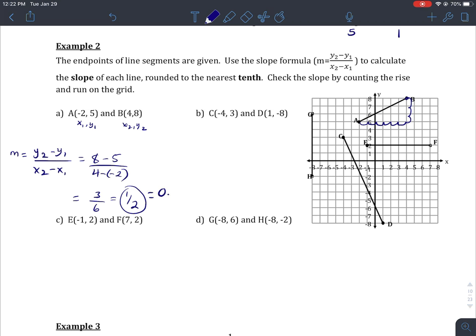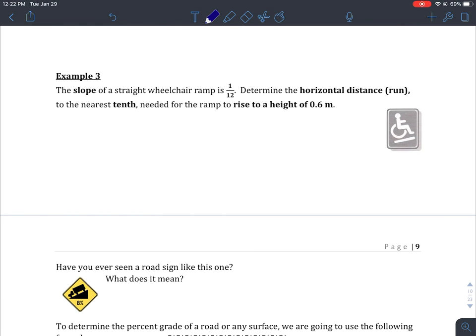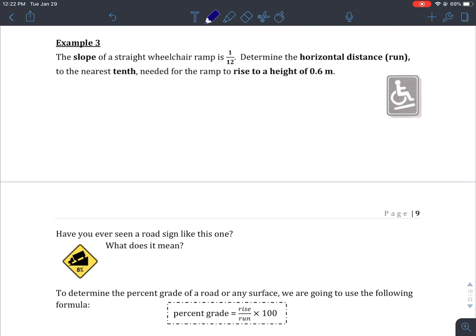Example 3: The slope of a straight wheelchair ramp is 1 over 12. Determine the horizontal distance, the run to the nearest tenth, for the ramp to rise to a height of 0.6. It helps to see it as a picture. My ramp might look something like this.